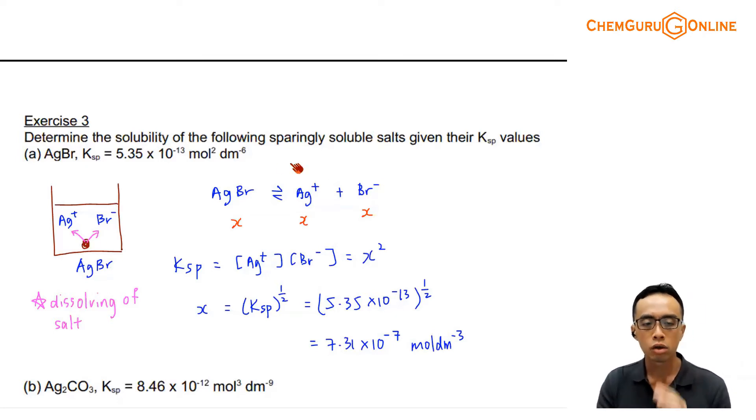And of course we can link it to Ksp, solubility product. So AgBr gives me Ag+ and Br-. Dissociation is 1 to 1 to 1, so this would be X to X to X. So my Ksp will be Ag+ concentration, which is X, times Br- concentration, which is also X, so therefore this would be X squared.